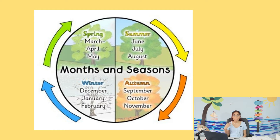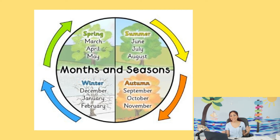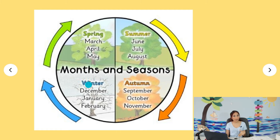Remember that we have four seasons and 12 months in a year — that's what we've been talking about. So we have four seasons and 12 months, and each season lasts three months. We start and also finish the year in winter, because winter starts in December.